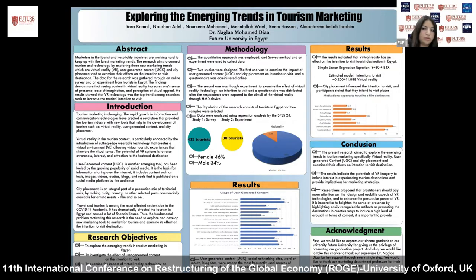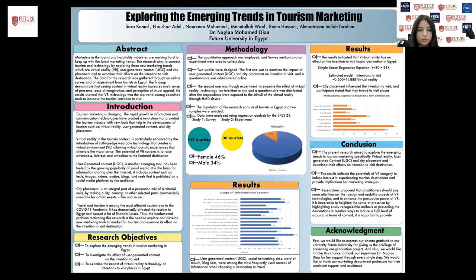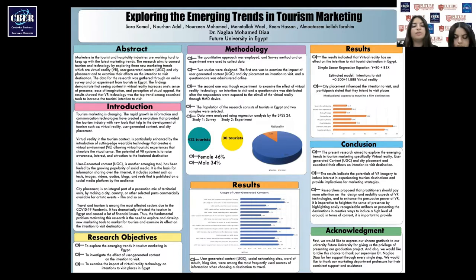Our research objectives are: to explore the emerging trends in tourism marketing in Egypt, investigate the effect of user-generated content on the intention to visit, examine the impact of virtual reality technology on the intention to visit, and highlight the correlation between city placement and people's intention to visit.